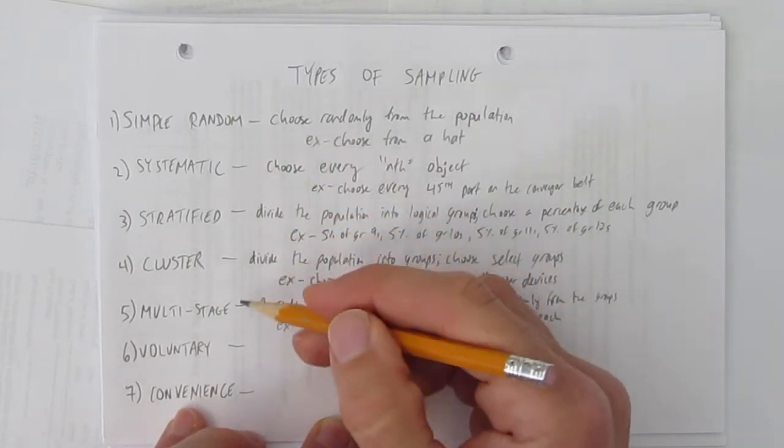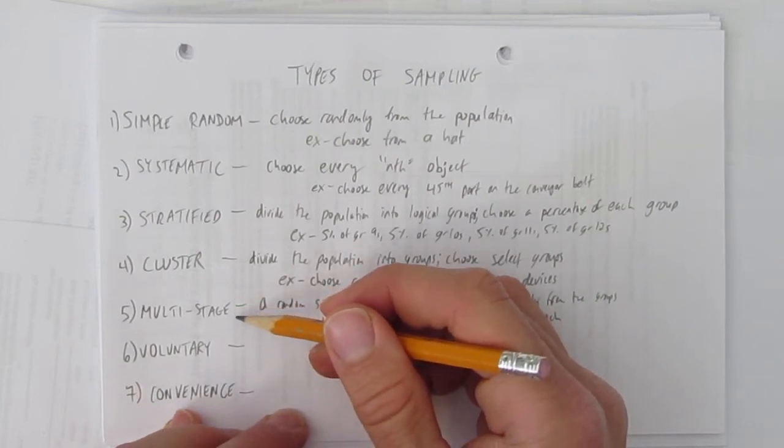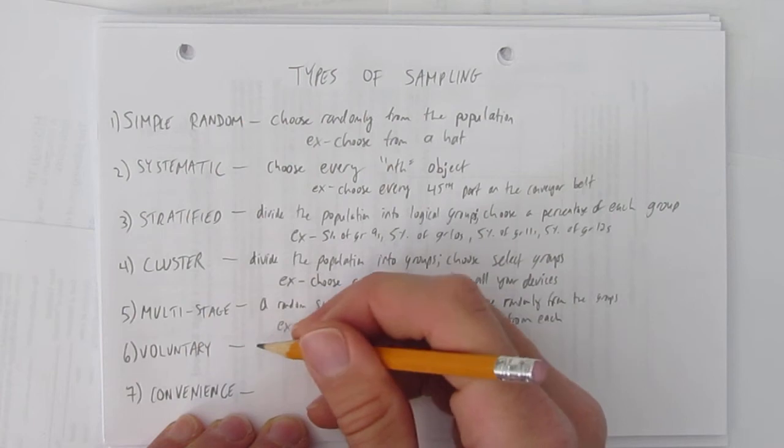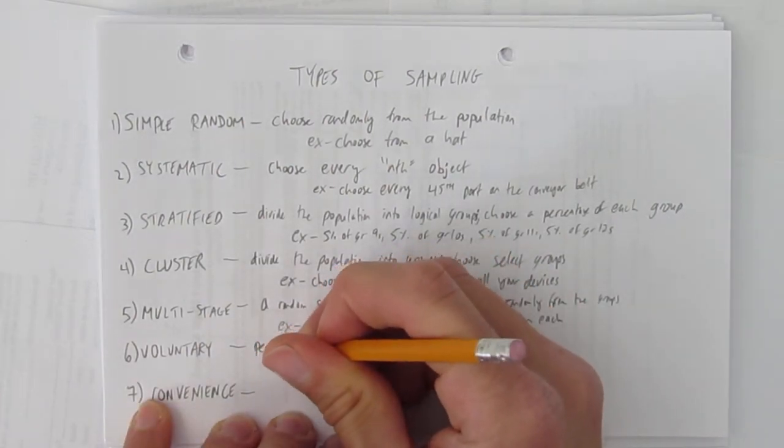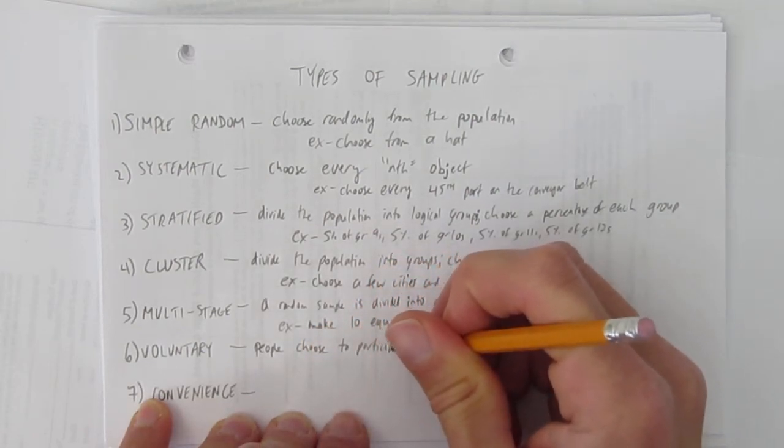All of those first five are good except cluster can sometimes go wrong, but the other ones tend to avoid bias if they're done right. But voluntary and convenience are almost always biased. In a voluntary sample, people choose to participate themselves.